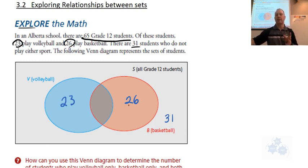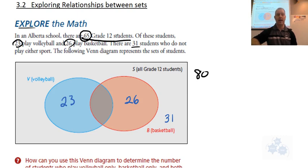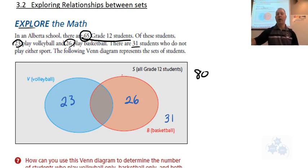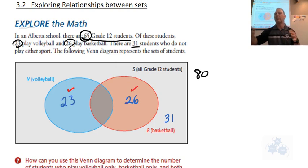Right away we know we have to make some adjustments. Does anyone know why this adds up to 80 and not 65? Exactly — some kids could probably play both sports. Is there anyone in this room that played volleyball and basketball? See, we have some that did. Obviously you can play both sports, so that means that of the 23 and of the 26, some of these were the same people, and really we've counted them twice.